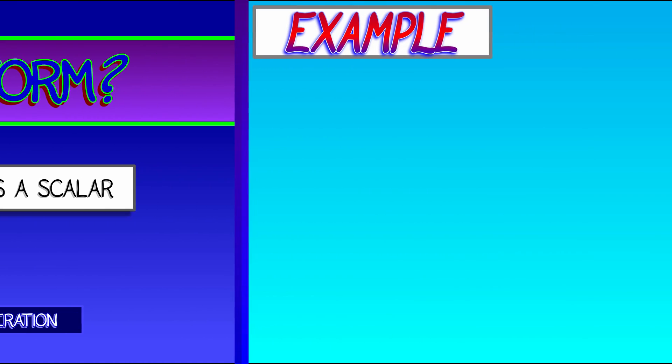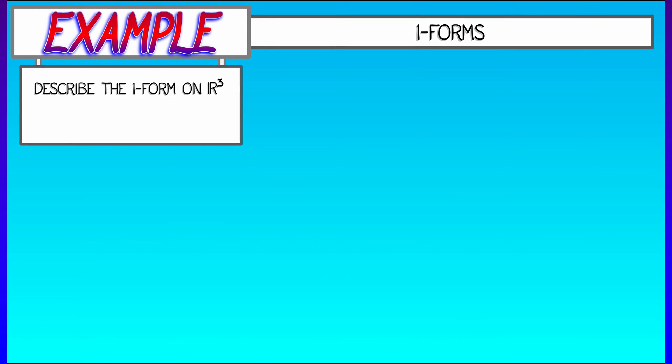Let's dig into an example of a specific one-form, alpha on R³, given by 2dx minus dy plus 3dz. If I feed to this the vector u given by (0, 0, 1),